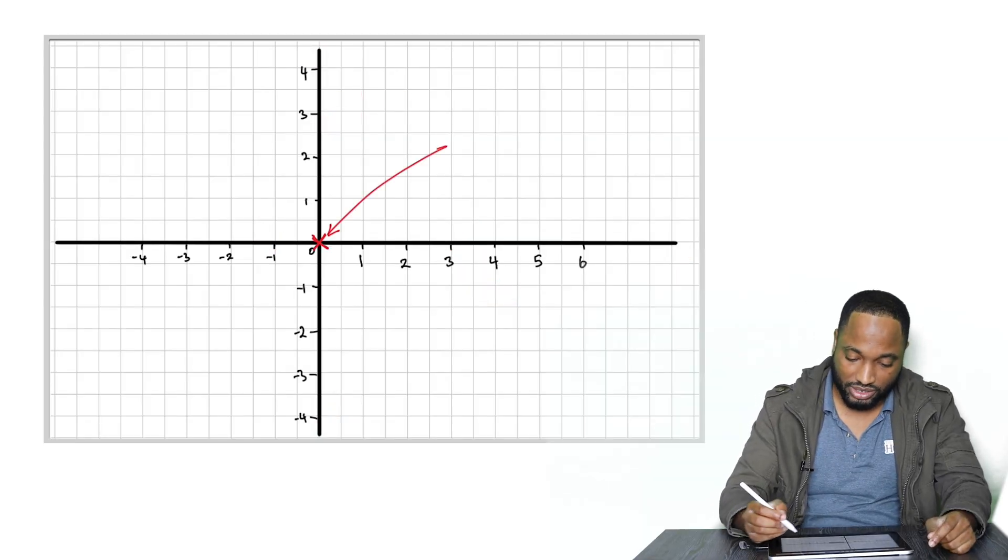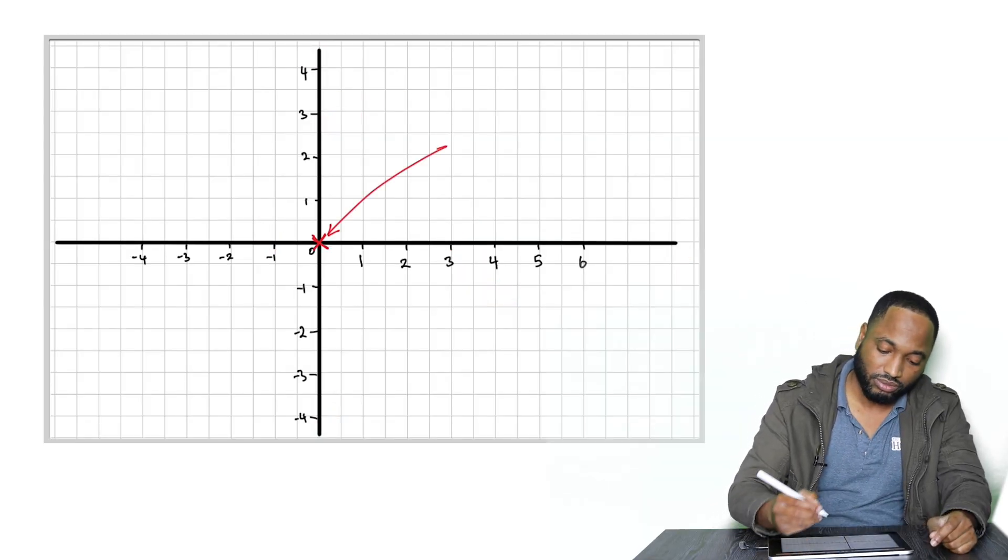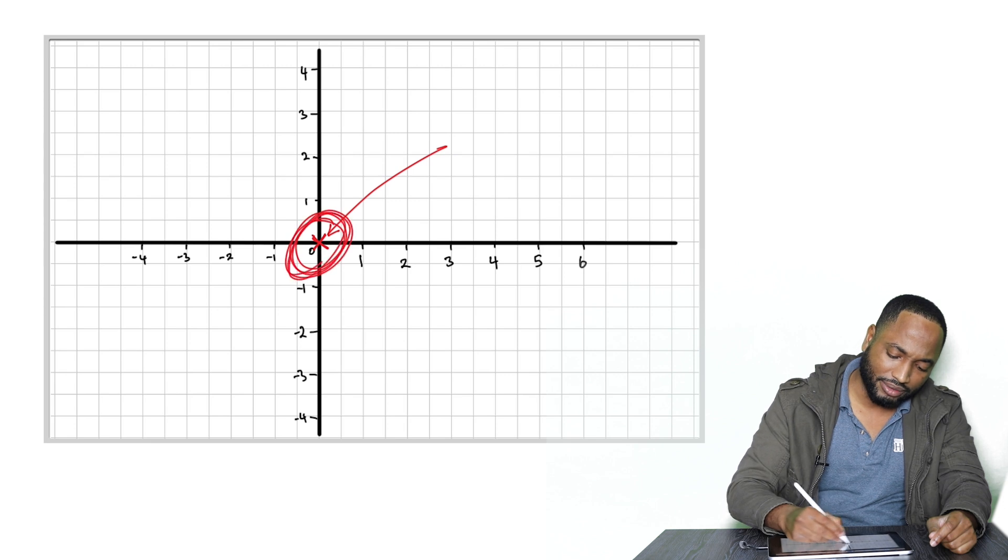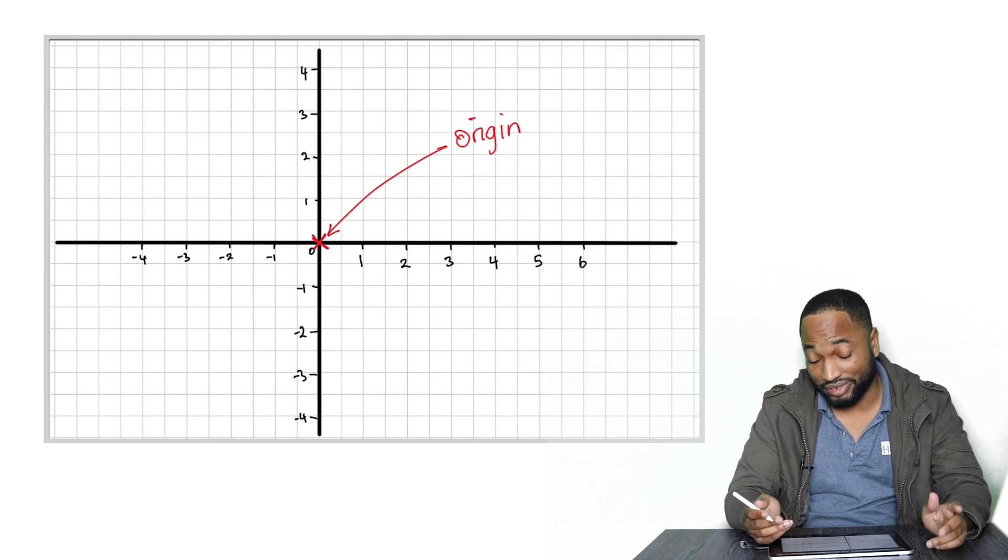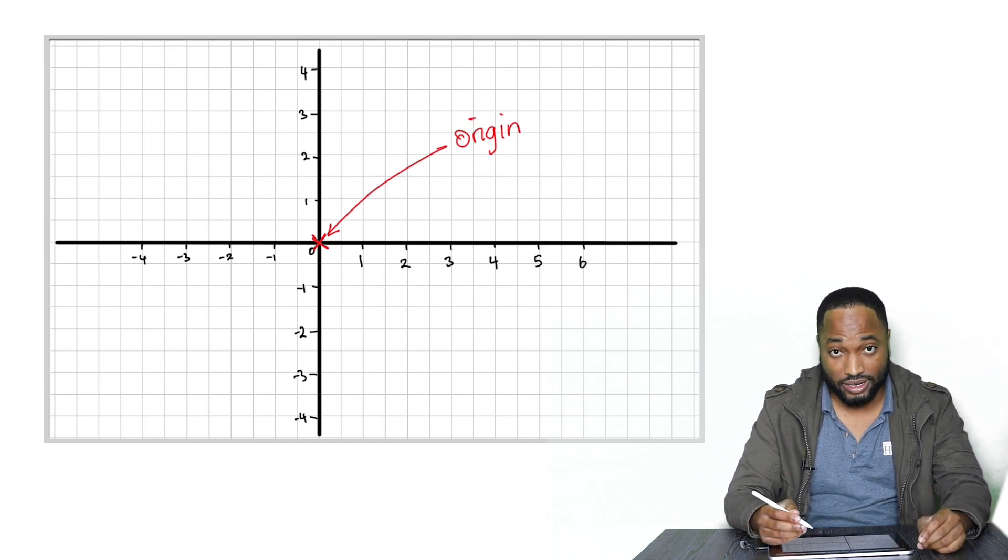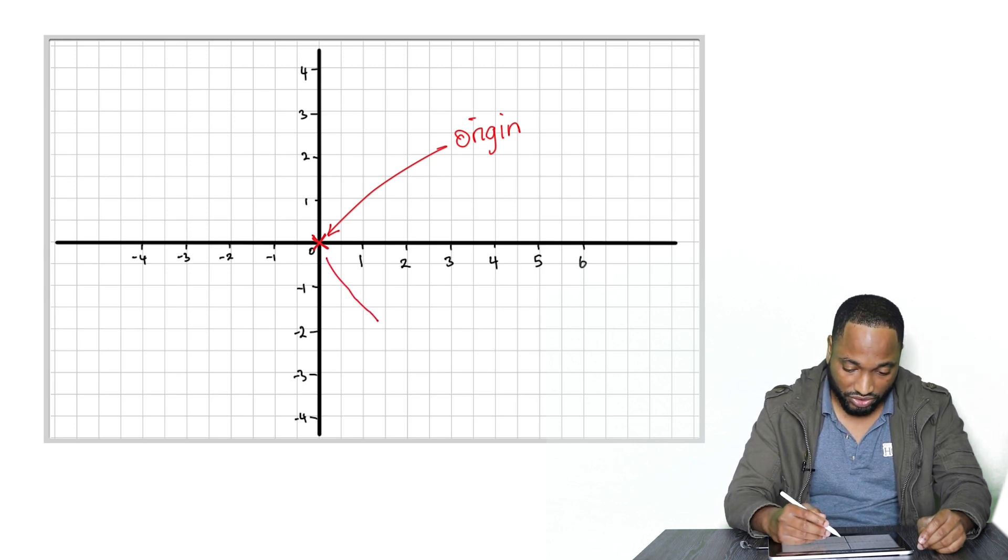One more thing before we go: this point in the middle here has a special name. We call that the origin. That's where all the points originate from, and the special coordinate or ordered pair for the origin is zero, zero.